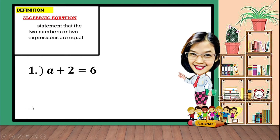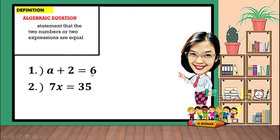For number 1, a plus 2 is equal to 6. a plus 2 is an expression, and 6 is also an expression. It is considered as an algebraic equation because there is an equal sign, which means that when you find the value of a and you add 2, the answer will be 6.